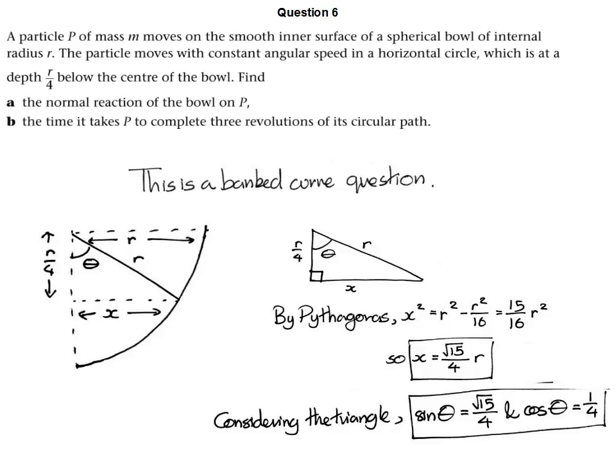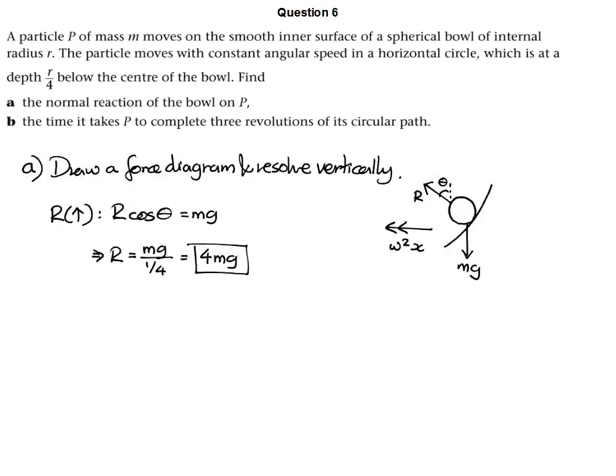Now we've got the radius of the circular motion, that's going to get plugged into either v squared over r or omega squared r. We've got to decide which one of those makes more sense to use. Given that in the question it's telling us that the time it takes P to complete three revolutions of the circular path is the goal, I reckon when we do the first part, we're actually going to want to use omega squared r. We're going to be using theta for the force diagram and x for omega squared r, and from then on it should be a relatively standard case of resolving in different directions.